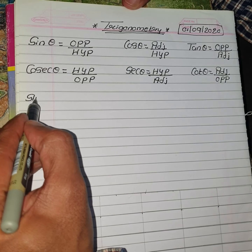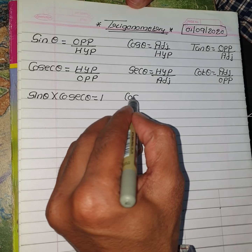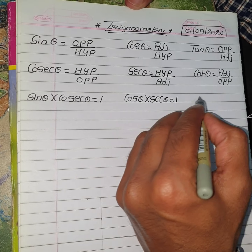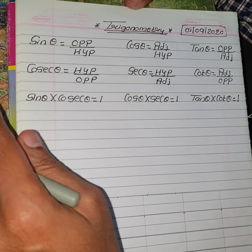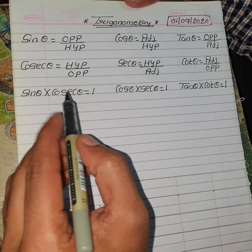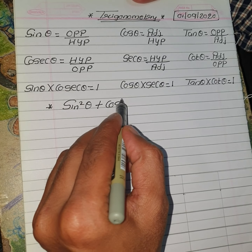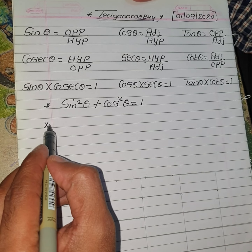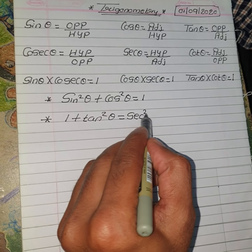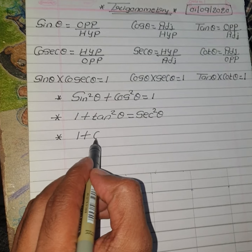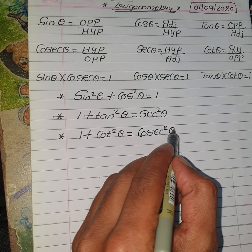So we can say that Sin Theta multiplied by Cosec Theta is always equal to 1. Cos Theta multiplied by Sec Theta is equal to 1. And Tan Theta multiplied by Cot Theta is equal to 1. In 9th Standard we saw one basic identity: Sin squared Theta plus Cos squared Theta is equal to 1. Now we are going to see two more identities: 1 plus Tan squared Theta is equal to Sec squared Theta, and 1 plus Cot squared Theta is equal to Cosec squared Theta.